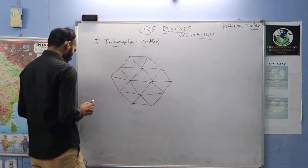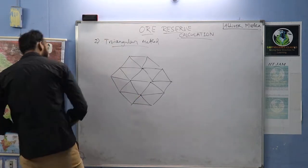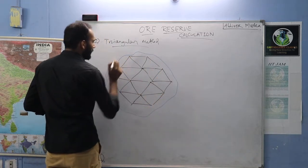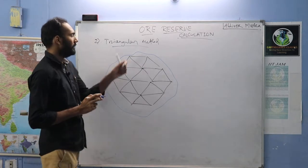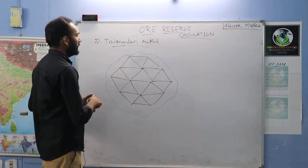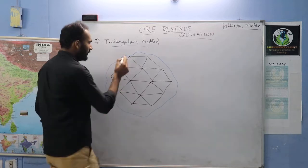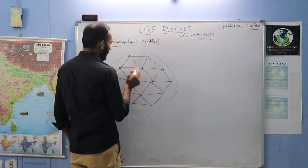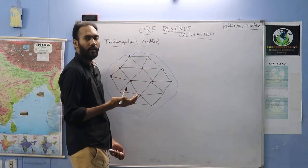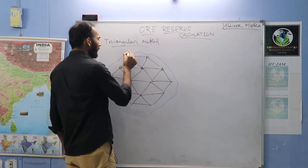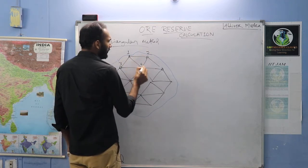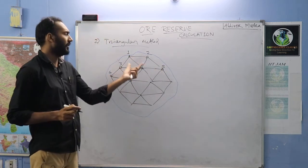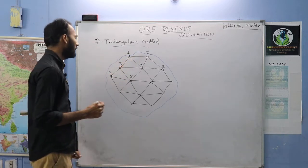The ore body is irregular in shape. The boreholes are placed such that each borehole is a vertex of a triangle. You have to name them accordingly — 1, 2, 3, 4, 5, 6, 7 — similar to what you have done in the grid pattern. The spacing between boreholes will be constant.